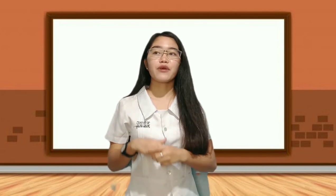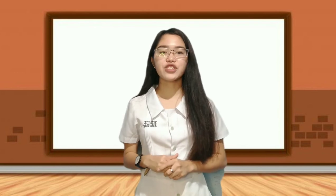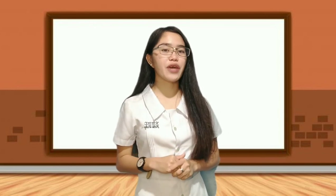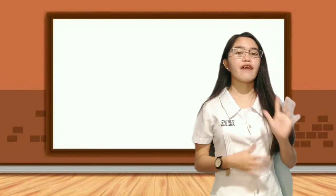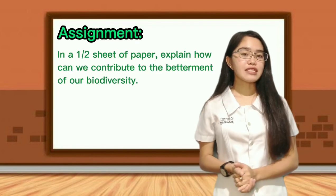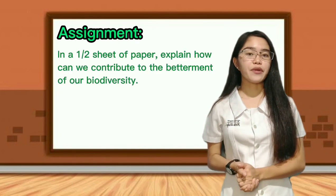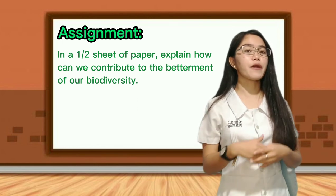Thank you everyone for participating in the activity. Please go back to your seats and arrange your chairs. Let's now test what you've learned from our discussion. Please get a one-fourth sheet of paper because we will have a short quiz. Please pass your papers in the center aisle in the count of 5, 4, 3, 2, and 1. For your assignment, in a one-half sheet of paper, explain how you can contribute to the betterment of our biodiversity.